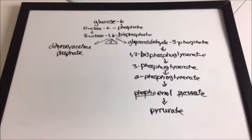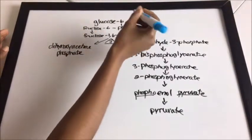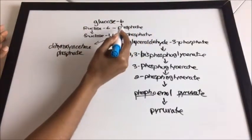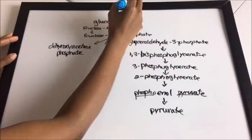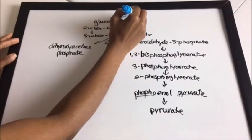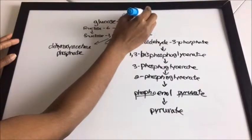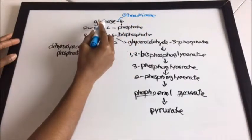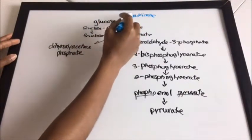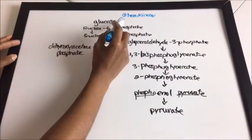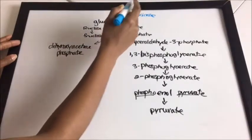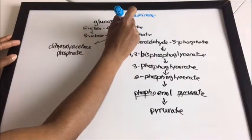The enzymes are up. The first one is hexokinase — so between glucose and glucose-6-phosphate is hexokinase, number one.